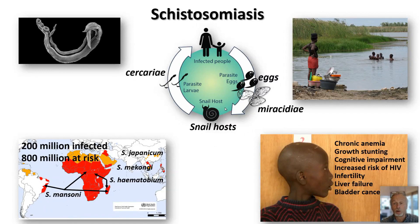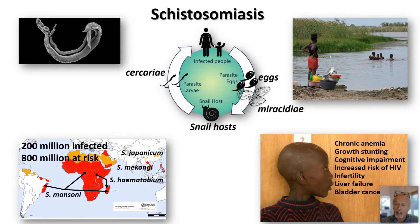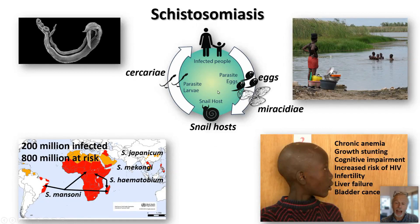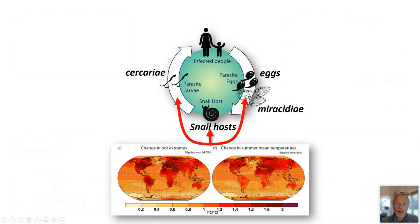The life cycle includes an obligate intermediate host, which happens to be freshwater snails of very specific species. People get infected when they step into contaminated water where there are free-living stages — the cercaria. Infected people release eggs that, in contact with water, hatch. These free-living stages, the miracidia, swim around and eventually find snails to infect. With three stages of the transmission cycle being ectotherms, unable to thermoregulate, climate change and temperature are going to have huge importance.